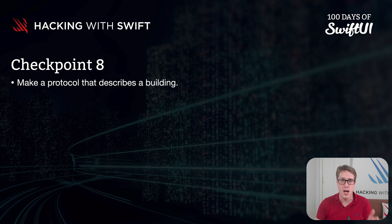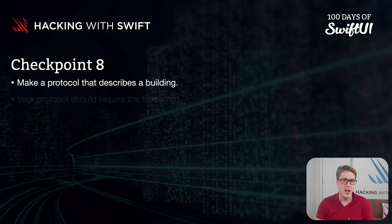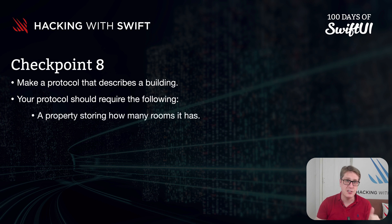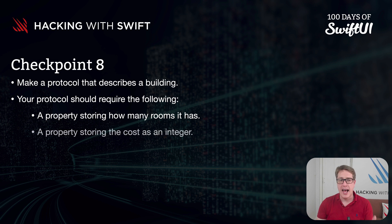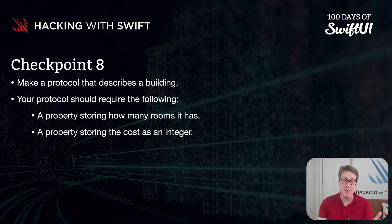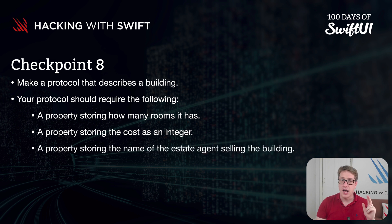You've got to create a protocol that describes a building. Inside your protocol, add various pieces of information, including an integer storing how many rooms the building has, and the cost as an integer — it's fine here, often it'd be like 500,000 for half a million, not 500,000.99. And a string containing the name of the real estate agent responsible for selling the building.